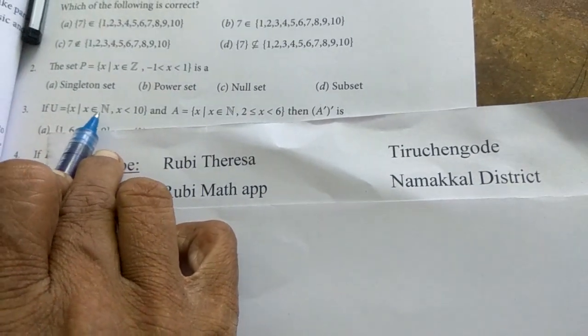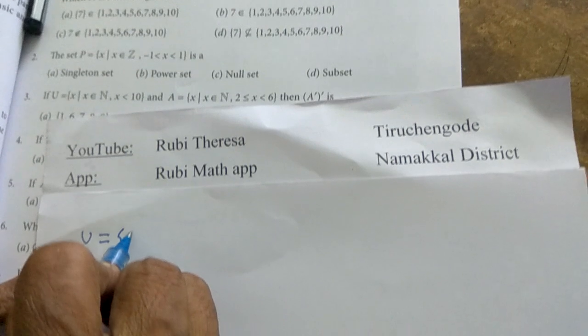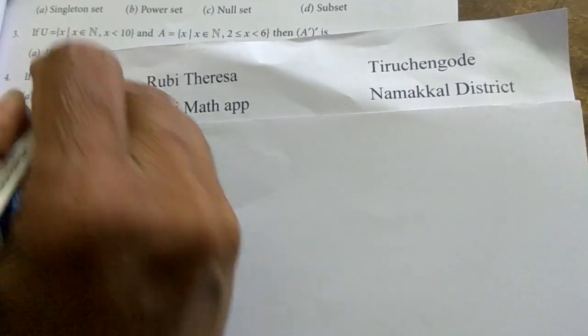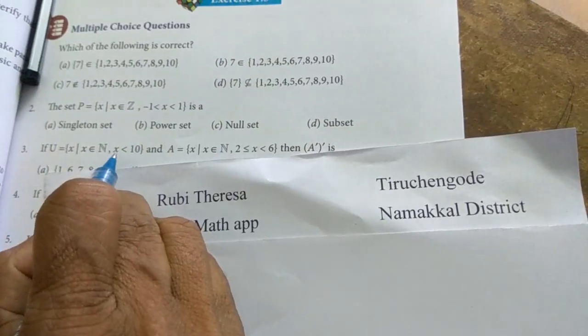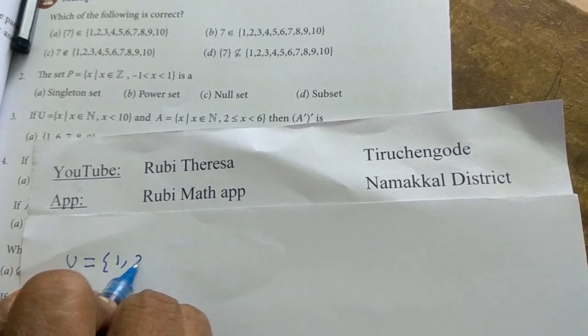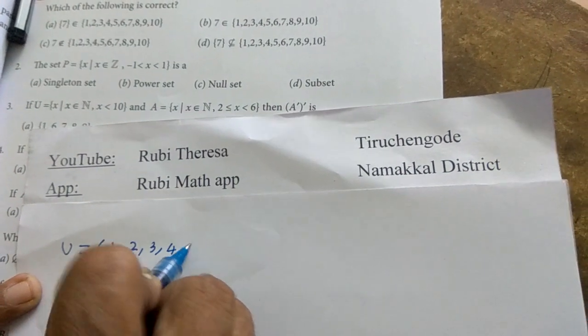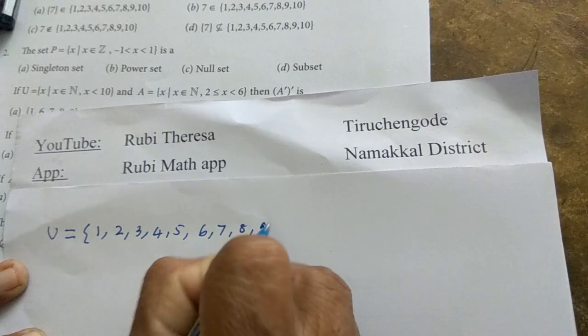x is an element of natural numbers. So starts with 1, less than 10. So stop at 9: 1, 2, 3, 4, 5, 6, 7, 8, 9.